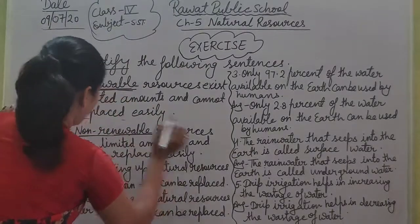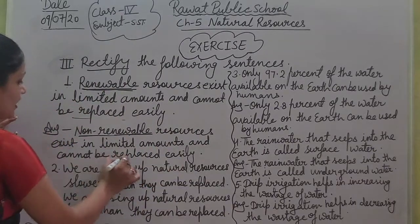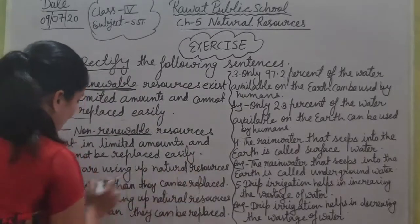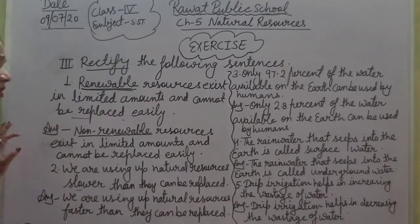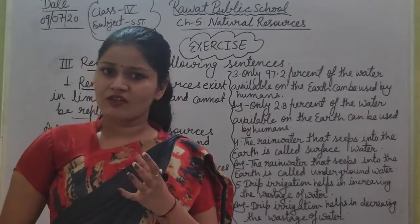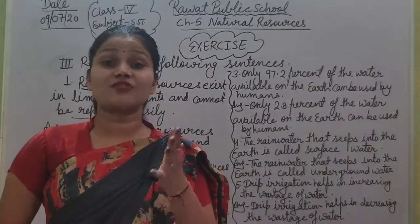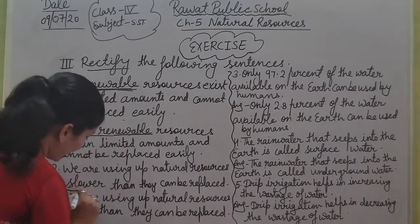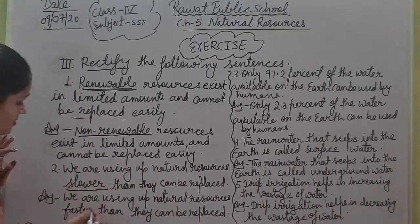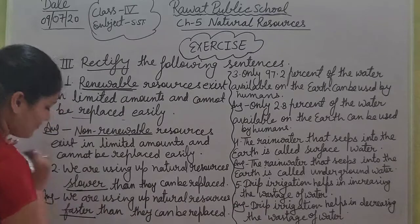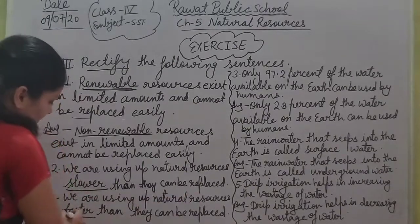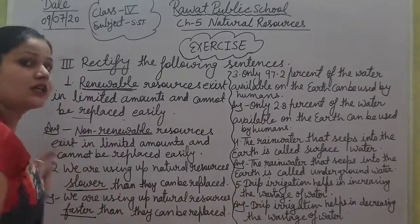Next sentence: 'We are using up natural sources slower than they can be replaced.' We are using natural sources slower — no, that is wrong. We are using natural sources faster. So the word slower is wrong and we will replace it with faster. The corrected sentence is: 'We are using up natural sources faster than they can be replaced.'